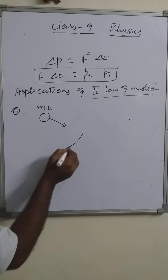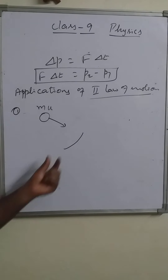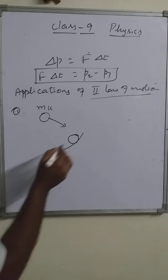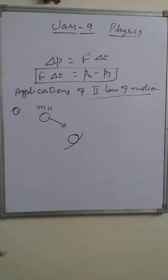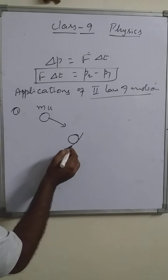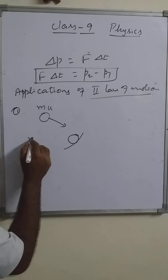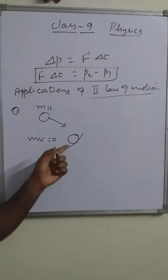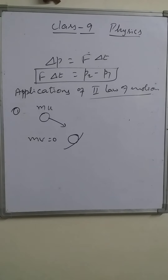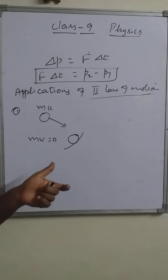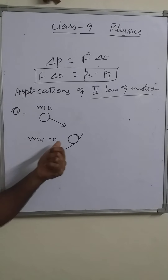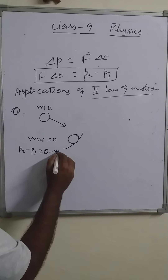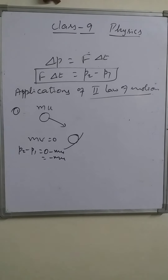Suppose the player holds the hand at a certain position and on reaching the hand the player catches the ball and stops it at once — immediately. As the ball is stopped, the final momentum equals zero because its velocity is zero. So the change in momentum equals final minus initial momentum, which is zero minus mu, giving minus mu.